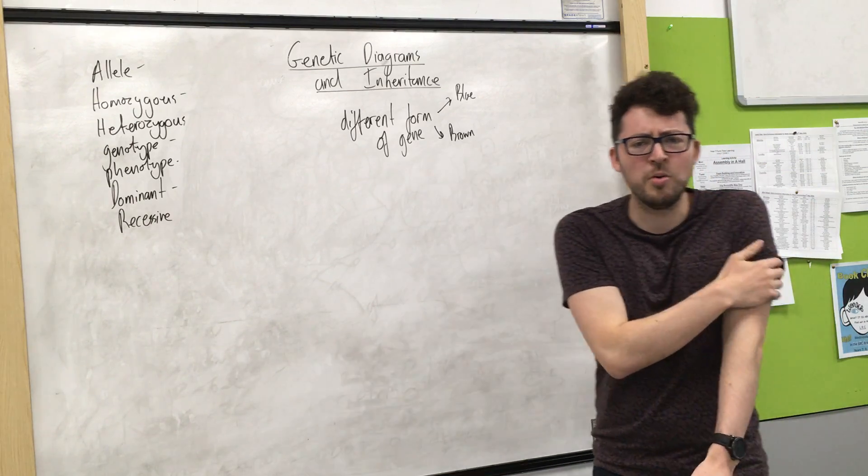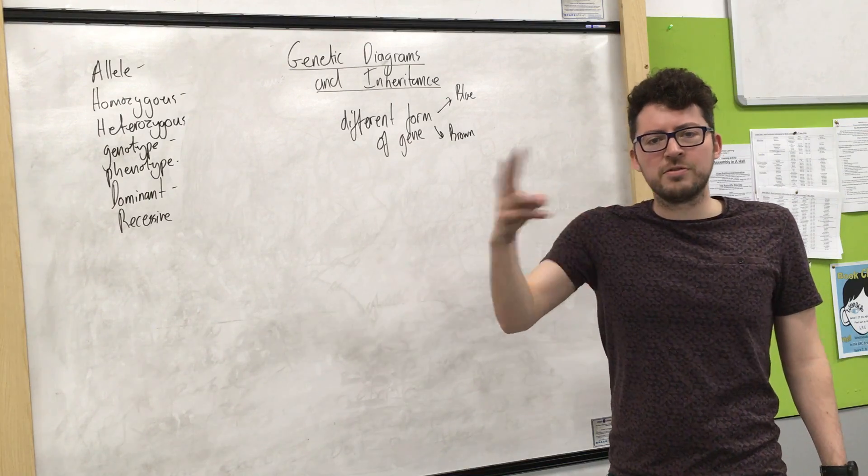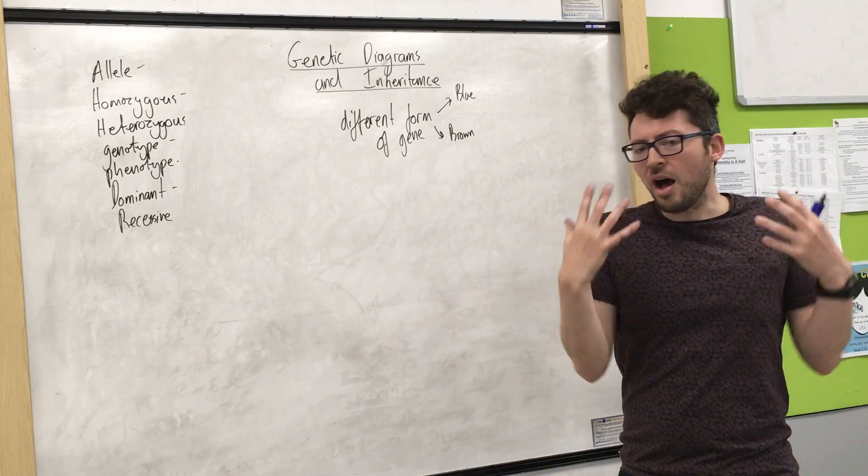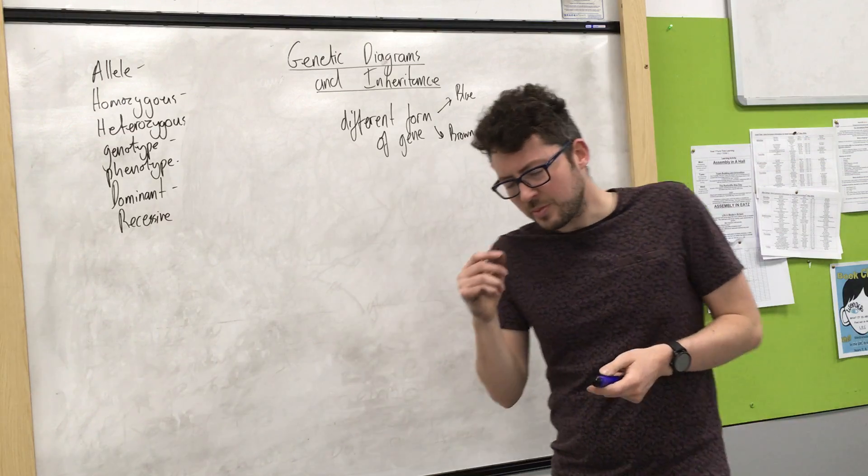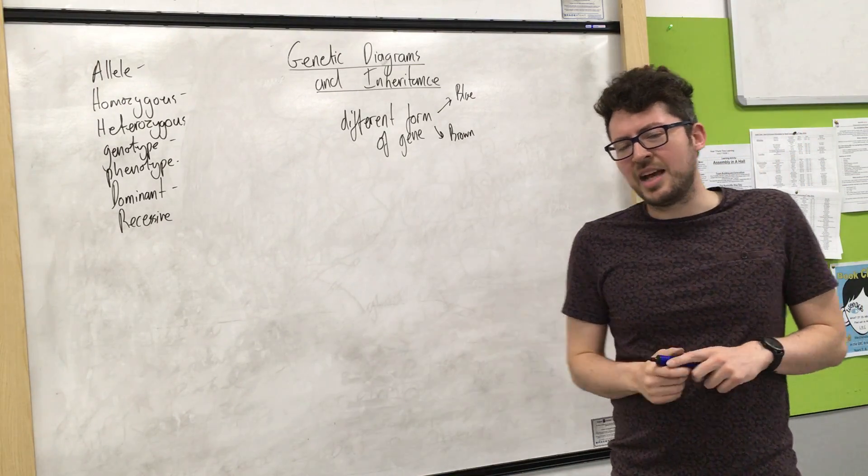Now as we know every person has two copies of a gene for a feature because we inherit half our DNA from our mother, half from our father. So I will have two copies of an eye colour gene. Now my eye colour is blue. We'll look at how I inherited that in a second.